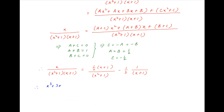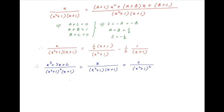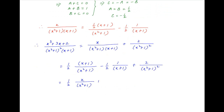Using this result, the integrand (x cubed plus 3x plus 2) over [(x squared plus 1) squared (x plus 1)], which equals x over [(x squared plus 1)(x plus 1)] plus 2 over (x squared plus 1) squared, can be further written as one-half times (x plus 1) over (x squared plus 1) minus one-half over (x plus 1) plus 2 over (x squared plus 1) squared. This further expresses as one-half of x over (x squared plus 1) plus 1 over (x squared plus 1) plus 2 over (x squared plus 1) squared.